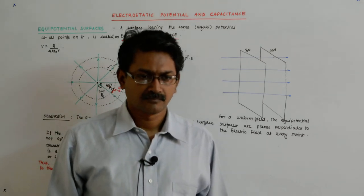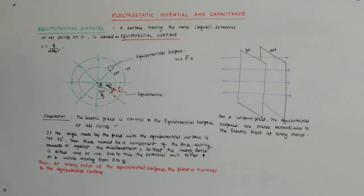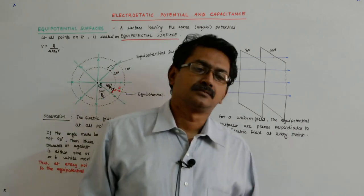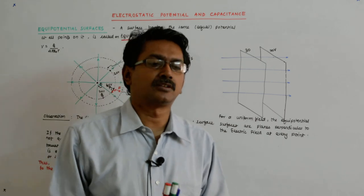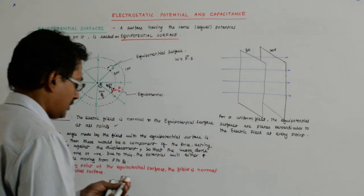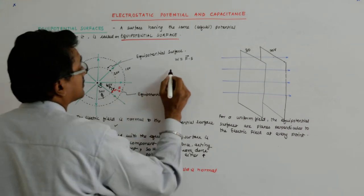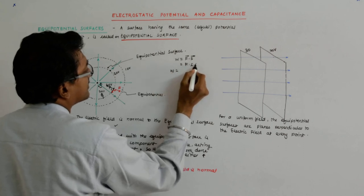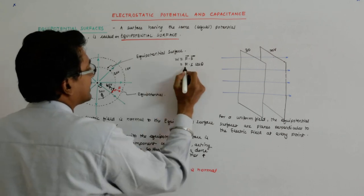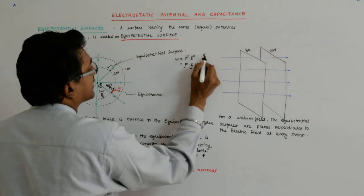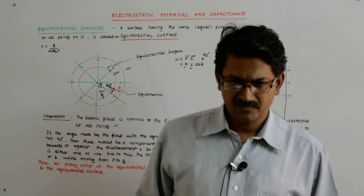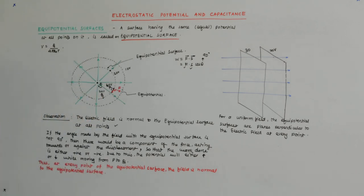F dot S is what we are bothered about. W is actually F dot S, which is F times S times cos θ. F is there, S is there, but θ has gone to 90 degrees when you are moving on an equipotential surface, so the work done is zero.